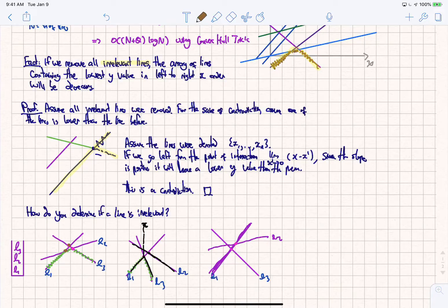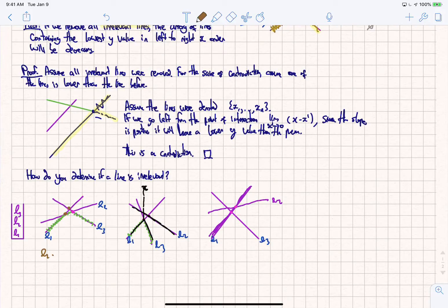We notice the following: we notice that L2 is irrelevant if and only if the point of intersection L1, L3, its x component, is less than the component of the other one.